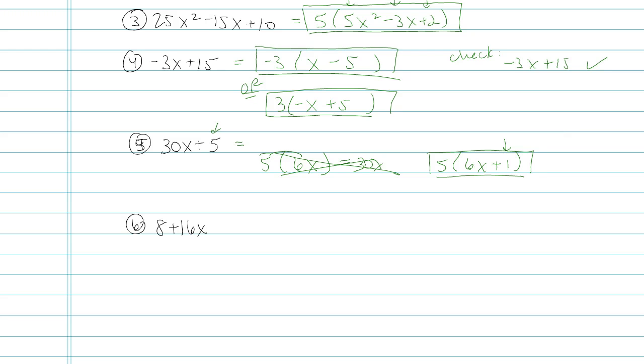That plus 1 is key as a placeholder to represent my plus 5 at the end of the problem. Check by distributing: 5 times 6x is 30x, good, and 5 times 1 is plus 5, good.